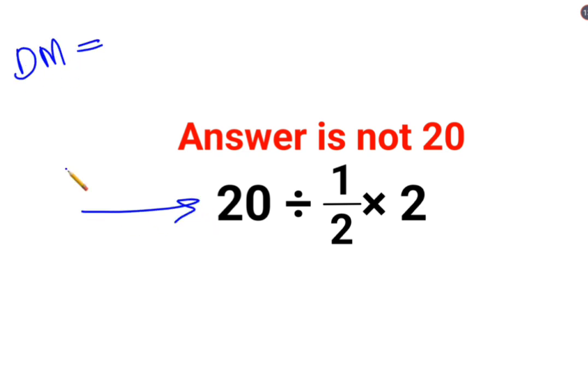So in sums like these, you just have to go from left to right. Whatever operation happens first in this question has to be done first. So first we will do 20 divided by half, or 1/2.